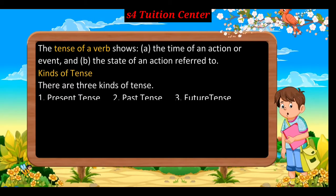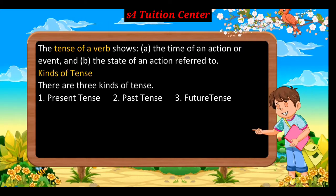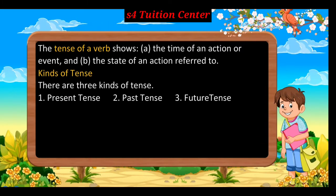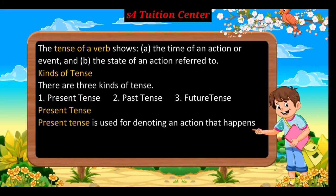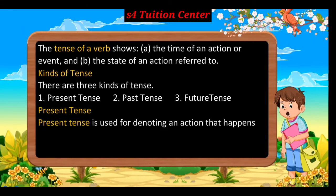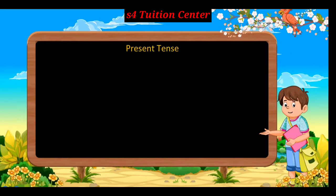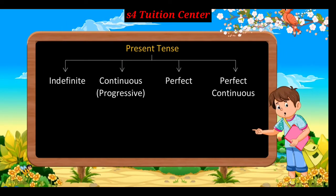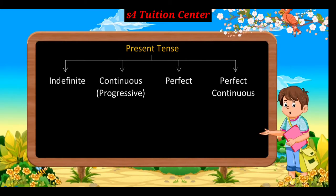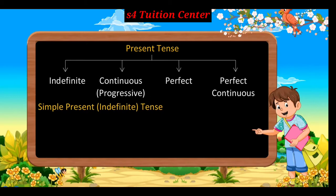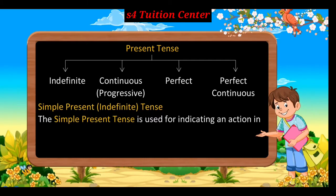Kinds of Tense: There are three kinds of tense — first, present tense; second, past tense; third, future tense. Present Tense: Present tense is used for denoting an action that happens now. Types of present tense: indefinite, continuous (progressive), perfect, and perfect continuous.